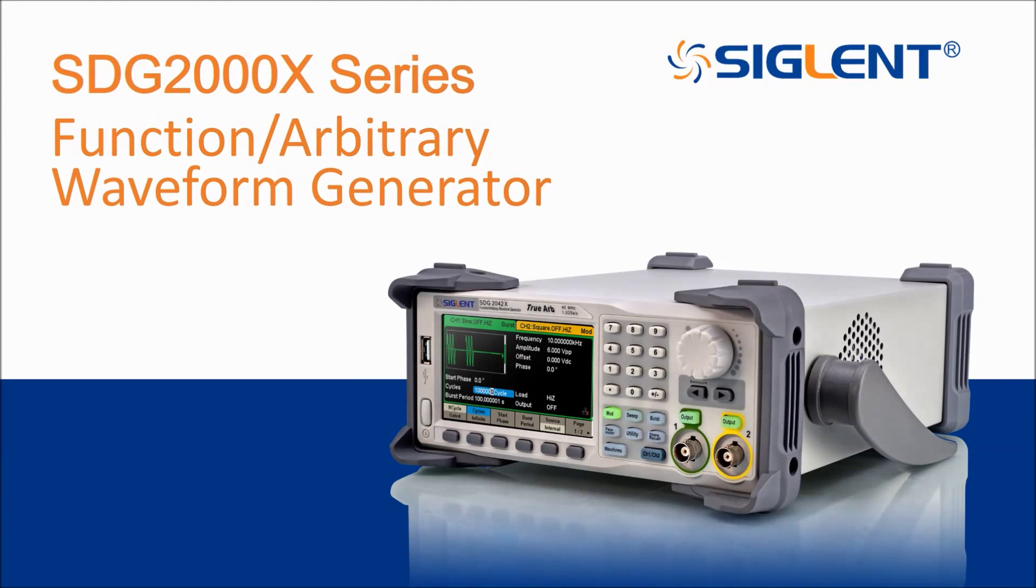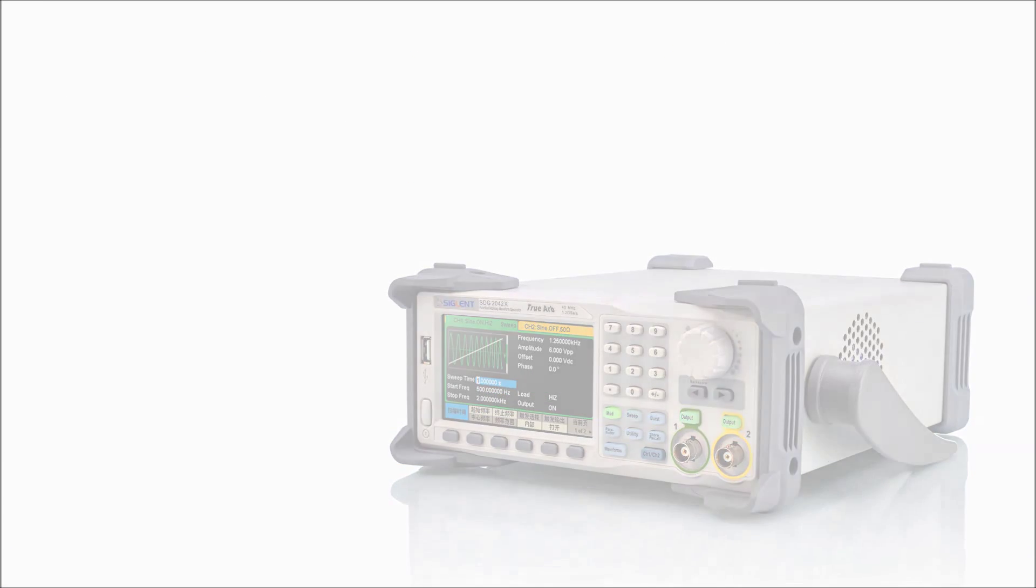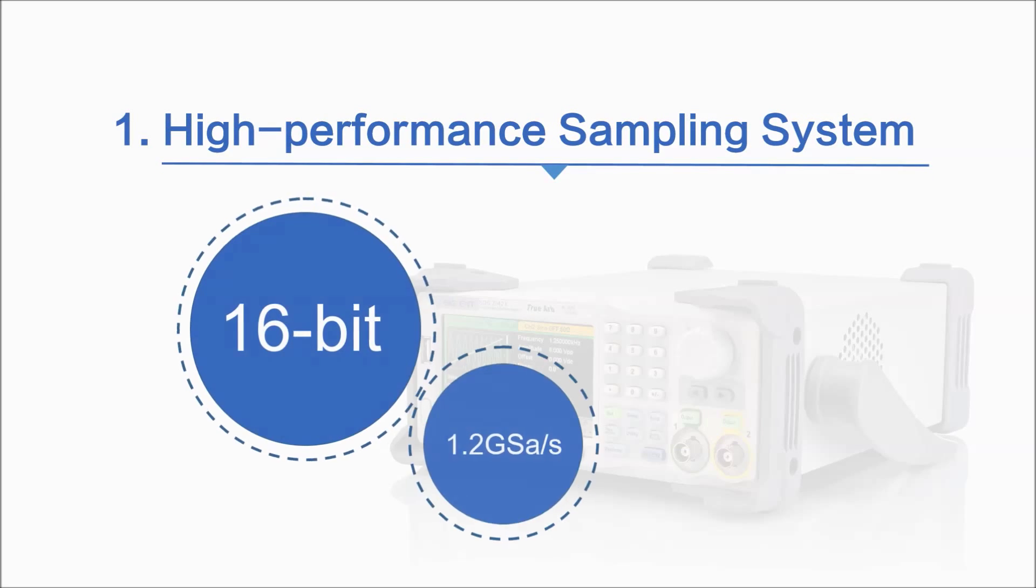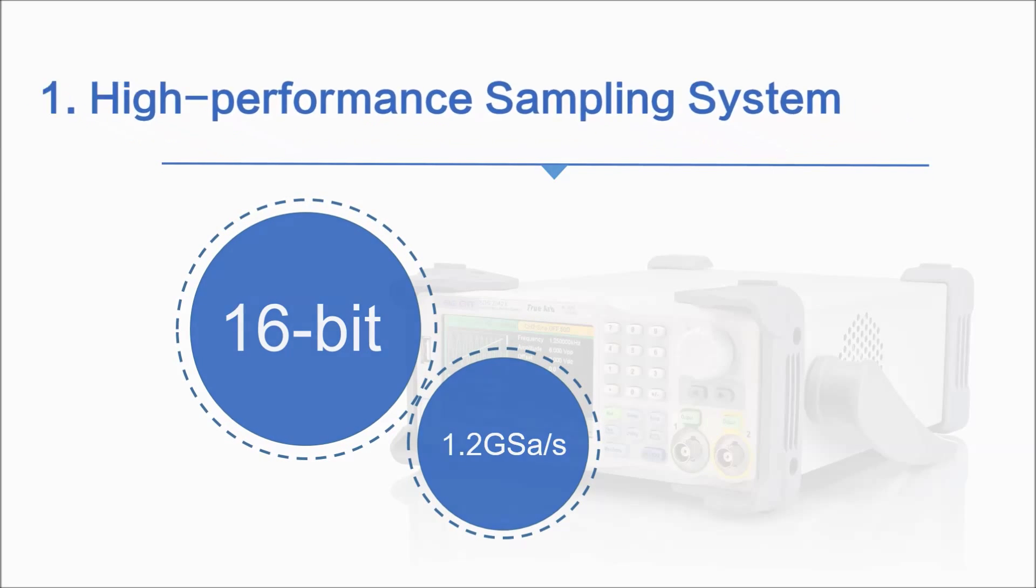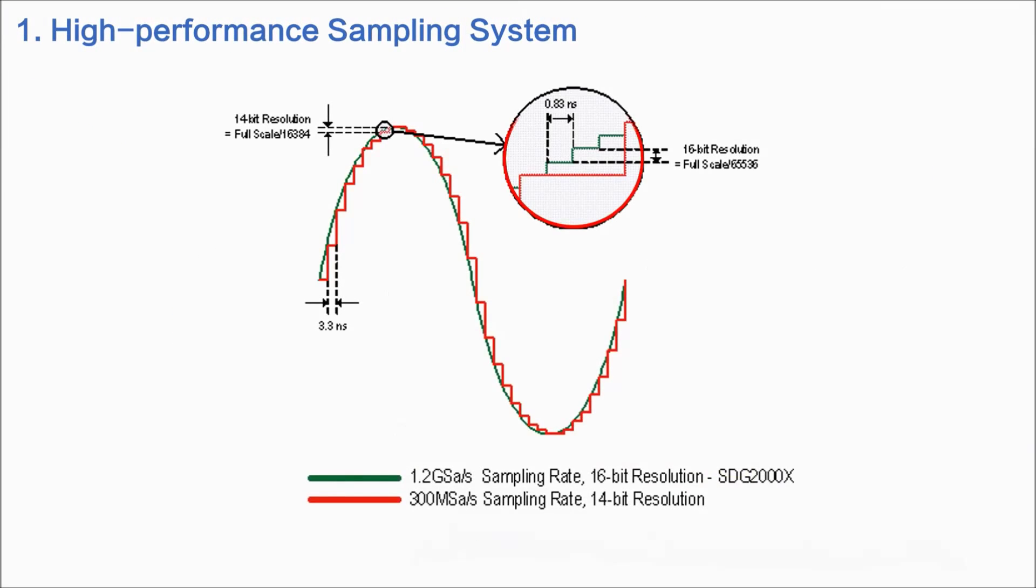Today I want to introduce Siglent's new SDG2000X series function arbitrary waveform generator. The SDG2000X has a high performance sampling system with 1.2 gigasample per second sampling rate and 16-bit vertical resolution, which results in more accurate reconstructed waveforms and lower distortion.